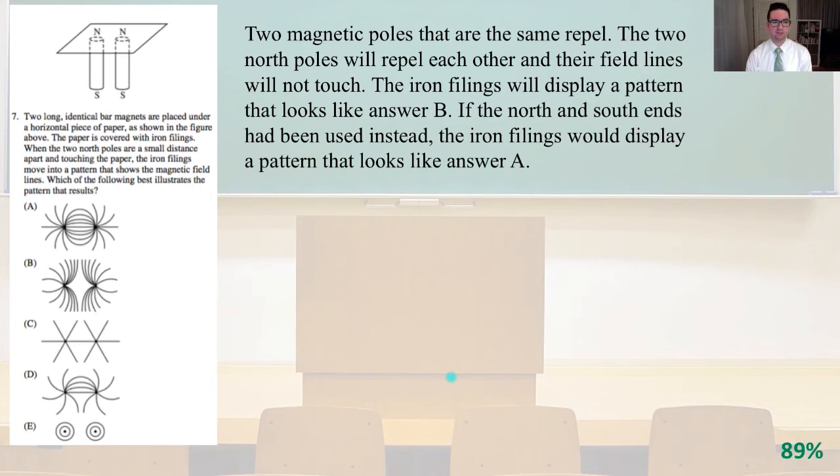Number seven. Two long identical bar magnets are placed under a horizontal piece of paper. The paper is covered with iron filings. When the two north poles are a small distance apart and touching the paper, the iron filings move into a pattern that shows the magnetic field lines. Which of the following best illustrates the pattern that results?